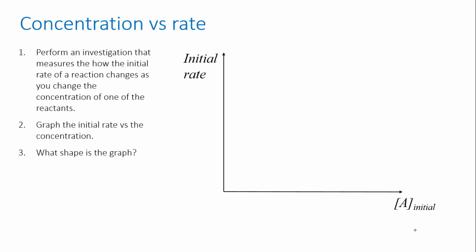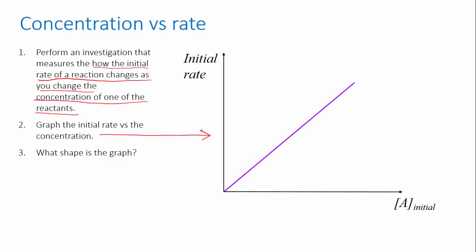Imagine I have a reaction and one of its reactants is called A. I vary the concentration of A and I collect some data on the initial rate for each concentration, keeping everything else constant. I then make a new graph and look at the shape, because this can tell me some important information. If there's a linear relationship between the rate and the concentration, the rate is directly proportional to the concentration of that reactant — we call that a first order dependence. We say the reaction is first order with respect to A.